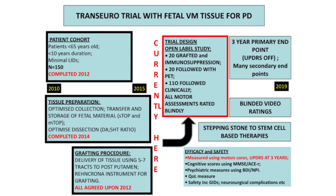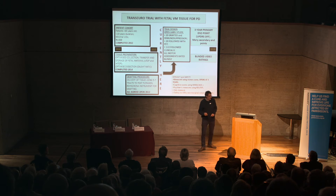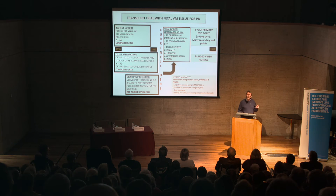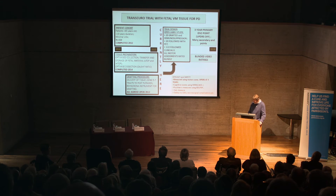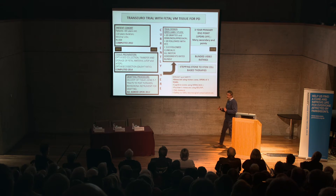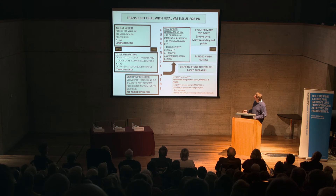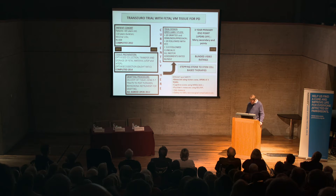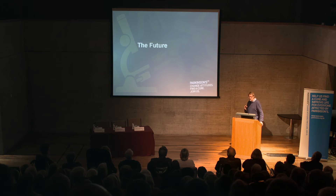We transplanted our first patient in Cambridge in May of last year and have now done ten transplants — five patients have had bilateral transplants on both sides of their brains. Just four days ago, the first patient in Sweden had their transplant, so we've done eleven transplants in eleven months.